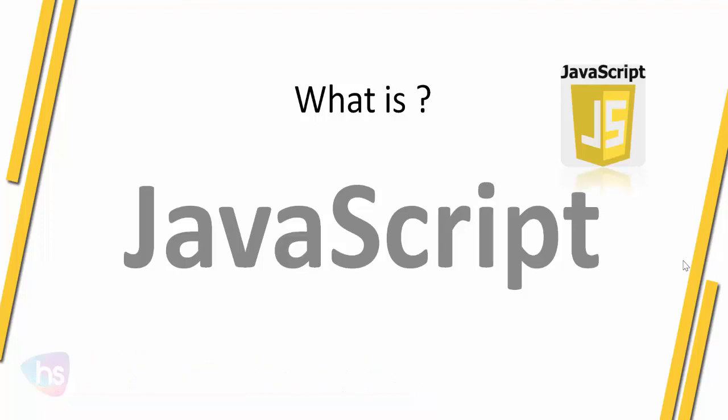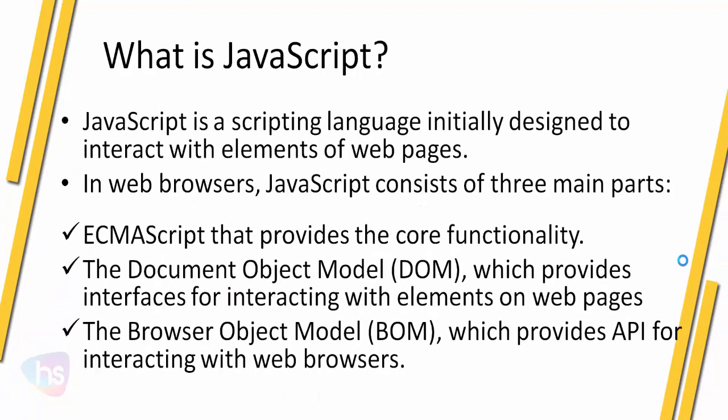JavaScript is a scripting language initially designed to interact with elements of web pages. In web browsers, JavaScript consists of three main parts. The first is ECMAScript, which provides the core functionality of JavaScript. The second is the Document Object Model, or DOM, which provides interfaces for interacting with elements on web pages, so called HTML pages.